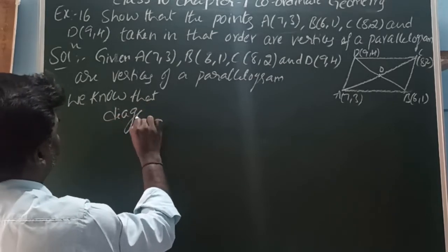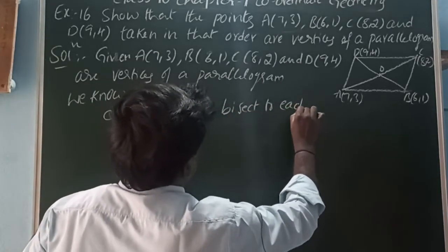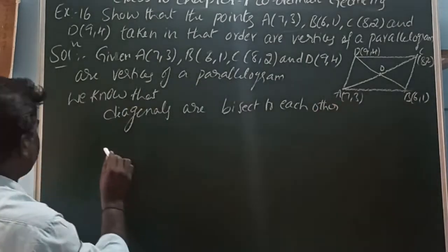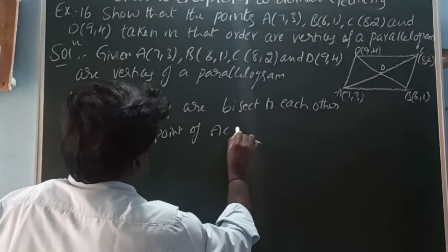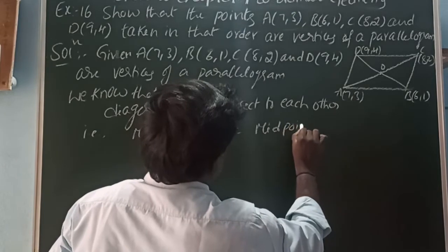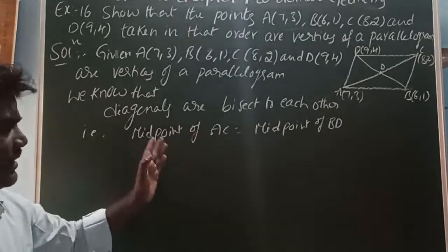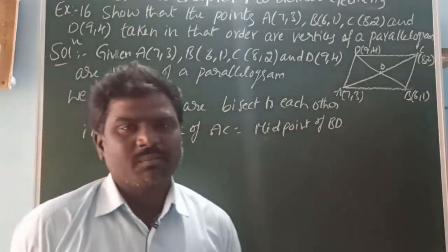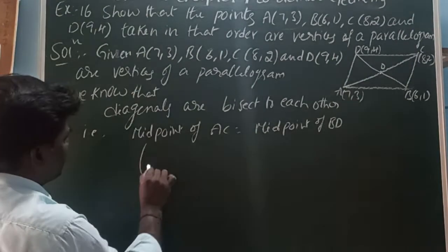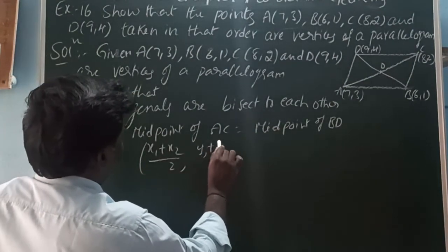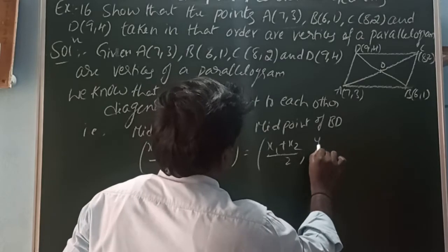The diagonals bisect each other. That is, the midpoint of AC is equal to the midpoint of BD. The two diagonals have the same midpoint — the common midpoint of the two diagonals. The midpoint formula is: x1 plus x2 by 2, y1 plus y2 by 2.